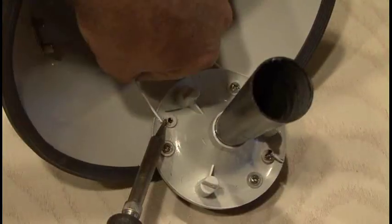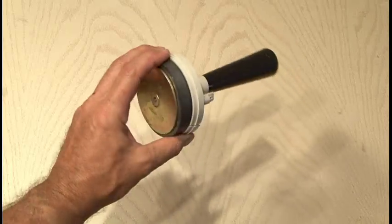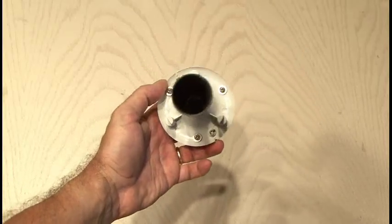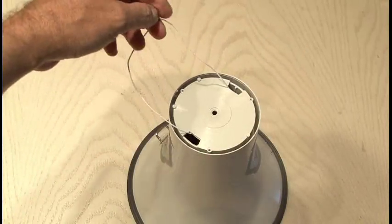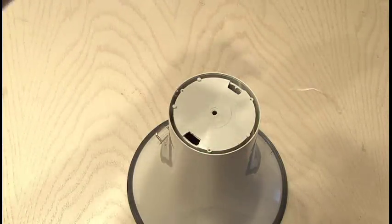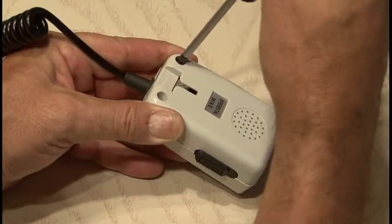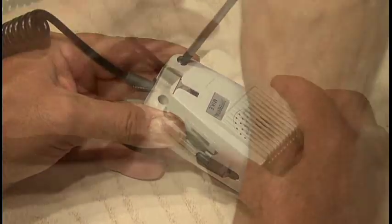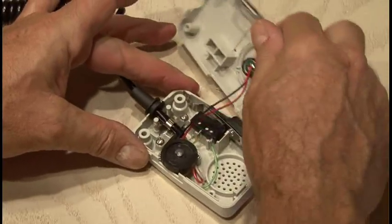Once there, unsolder the two connections at the speaker, and hang on to that cone speaker element for a future project. Remove that white connector and hang on to it. We're going to need it in a sec. Now it's time to tackle the microphone portion of the megaphone. There's two screws that hold that in place, and then the cover snaps off.